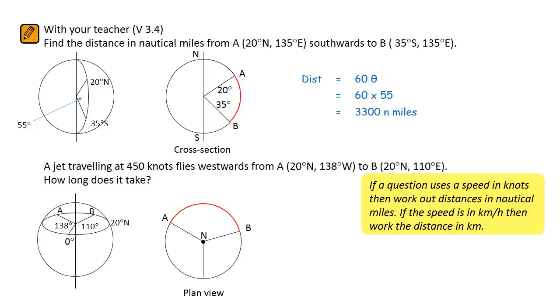B is 110 degrees east of the prime meridian, and A 138 degrees to the west of the prime meridian. We are going to use the distance formula, distance equals 60 cos alpha times theta. Theta is the angle subtended by the travel, shown in red on the diagram.